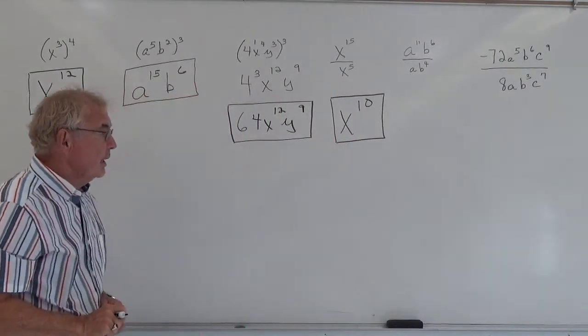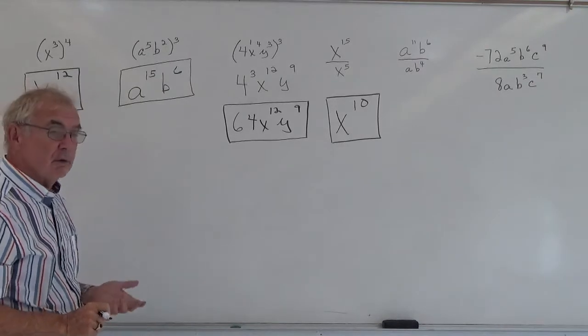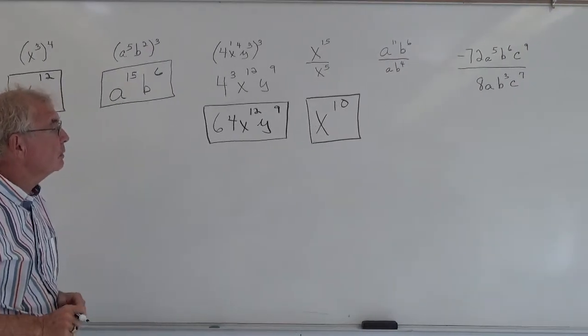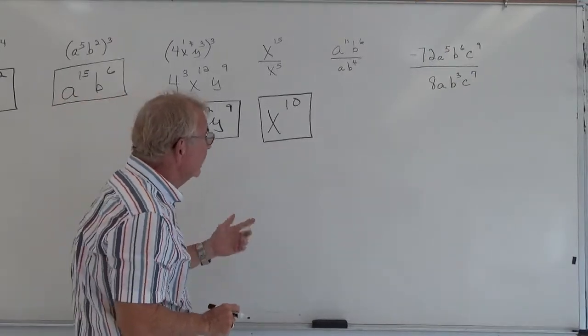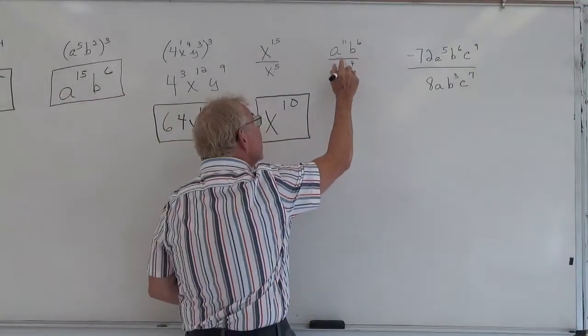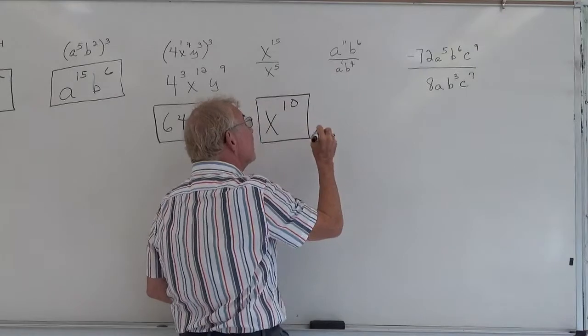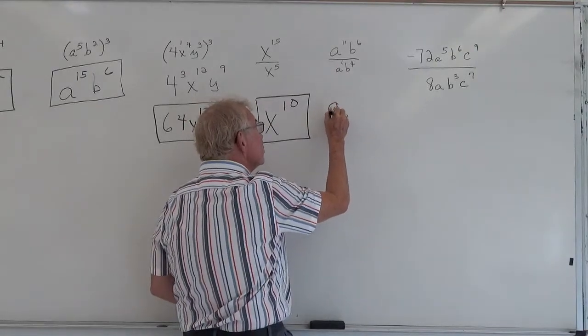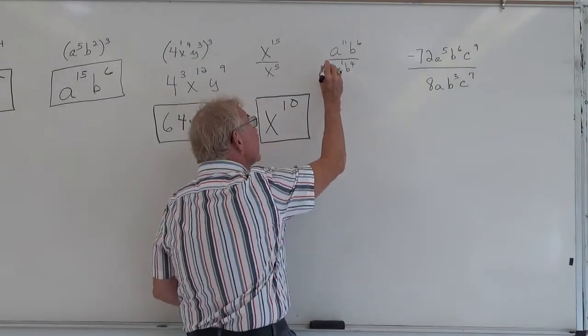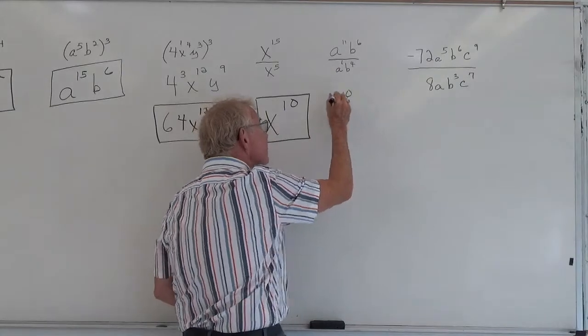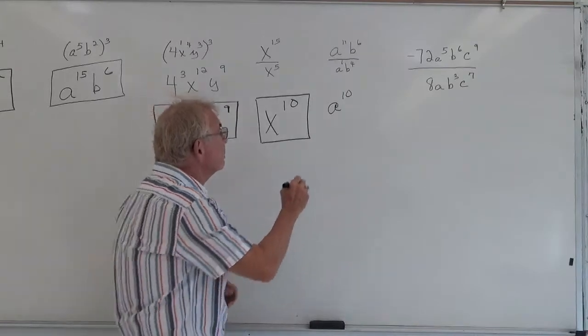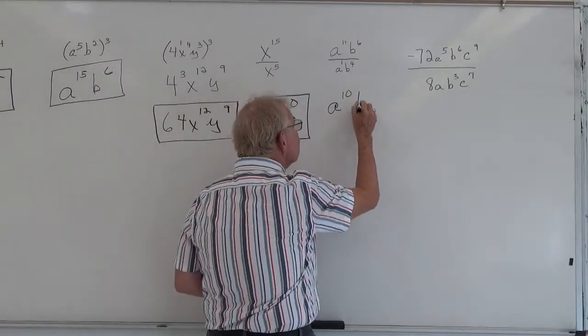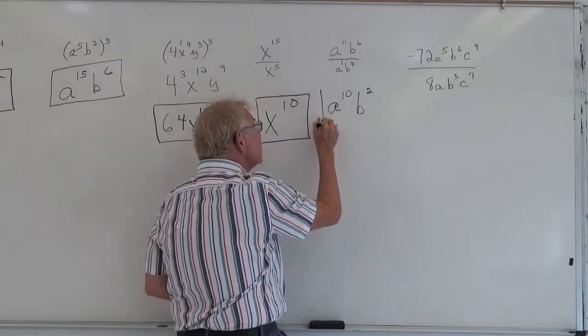Our next example is again a division, but this time we have two variables. So what do we do? Okay, you have a to the 11th over a. Remember, that's understood to be a 1. Put it there. So the rule states you subtract exponents. So it would be a, 11 minus 1 is 10, and b, 6 minus 4 is 2. And there's your solution.